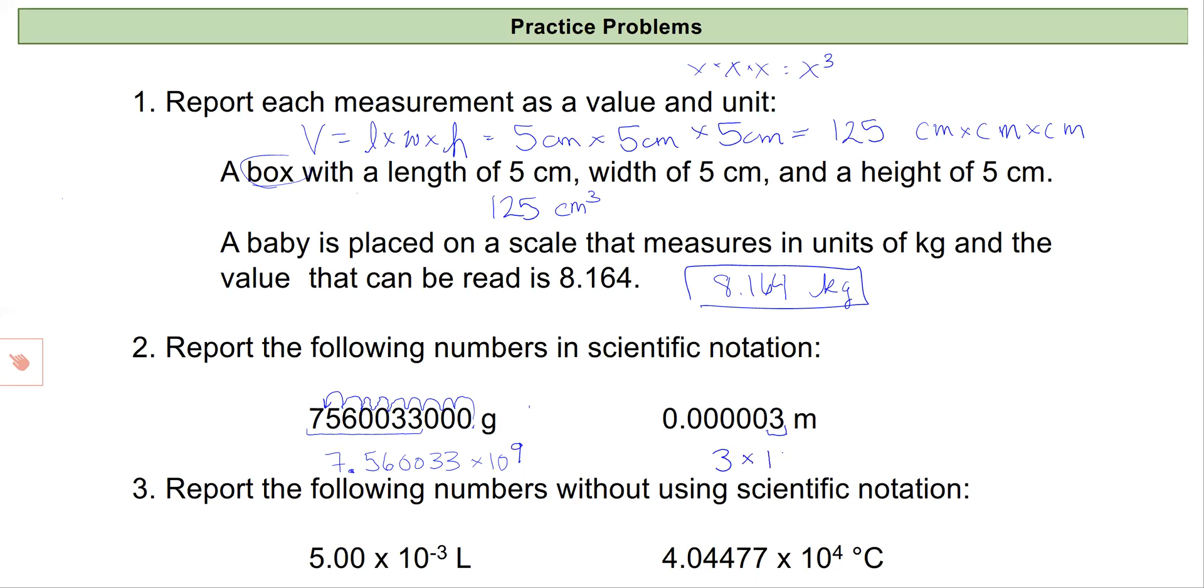And now I'm going to have a small number, which means a negative exponent. So my large number had a positive exponent; my small number will have a negative exponent. Let's see how many places I need to move this decimal: one, two, three, four, five, six. So times ten to the negative six.